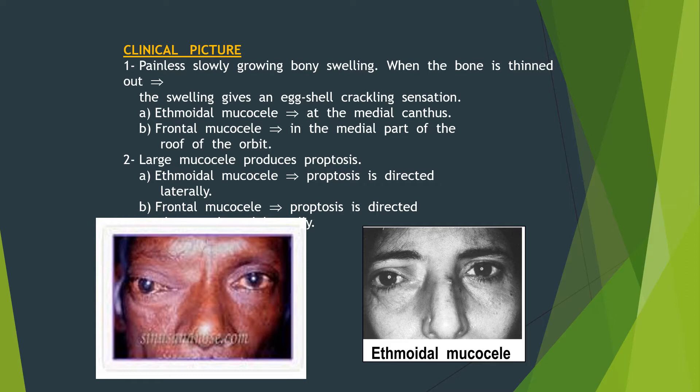In ethmoidal mucocele, the swelling will be at the medial canthus. In frontal mucocele, it will be in the medial part of the roof of the orbit. A large mucocele produces proptosis. In ethmoidal mucocele, the proptosis will be directed laterally, and in frontal mucocele, the proptosis will be directed downward and laterally.